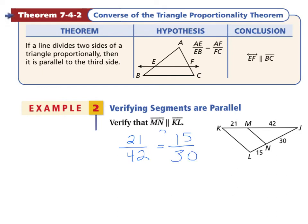Since each of these, if we're checking to see if they're equal, 21 over 42 simplifies into one half, as does 15 over 30, therefore they are equal.